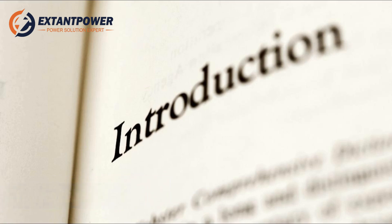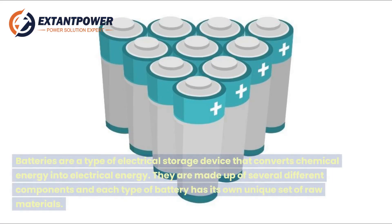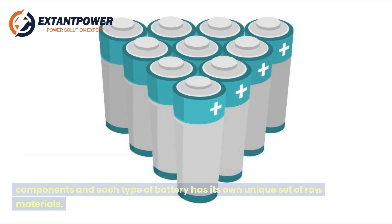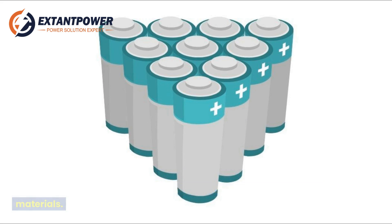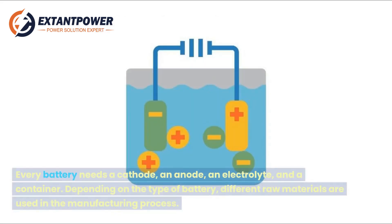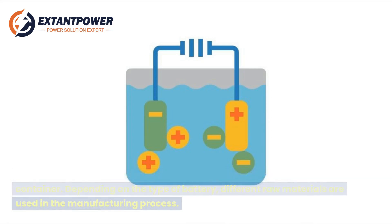Batteries are a type of electrical storage device that converts chemical energy into electrical energy. They are made up of several different components, and each type of battery has its own unique set of raw materials. Every battery needs a cathode, an anode, an electrolyte, and a container. Depending on the type of battery, different raw materials are used in the manufacturing process.